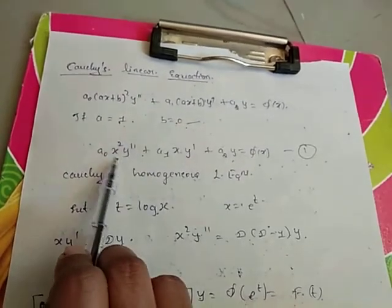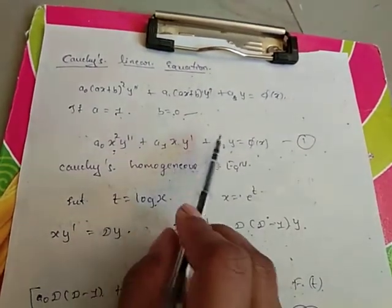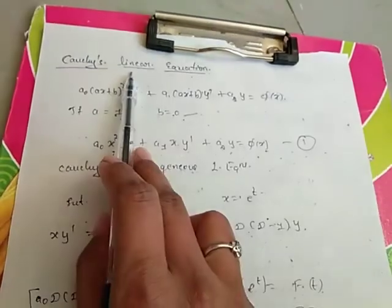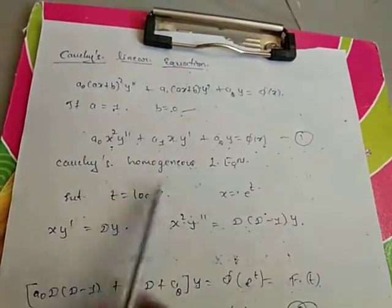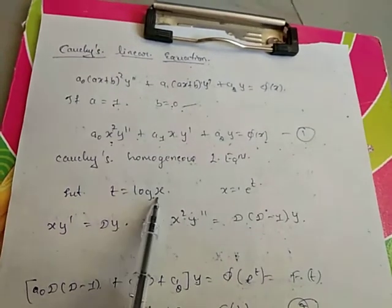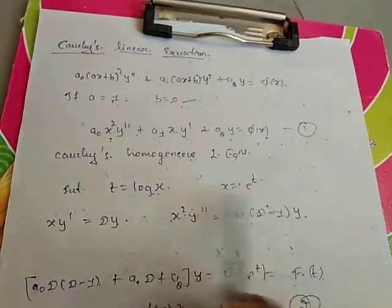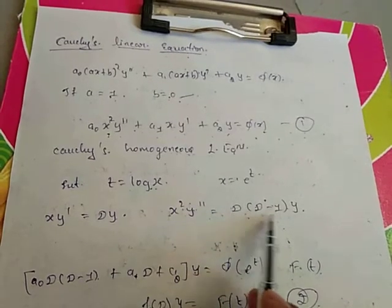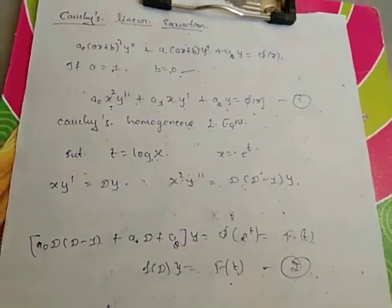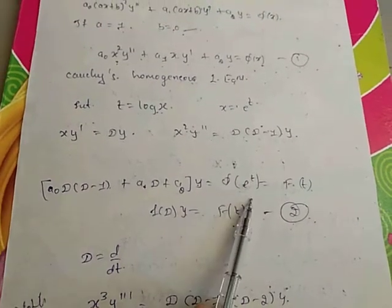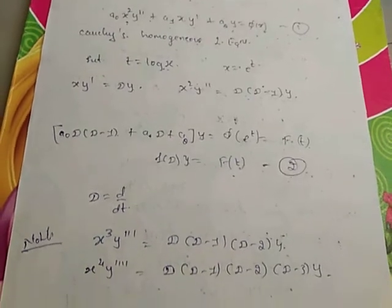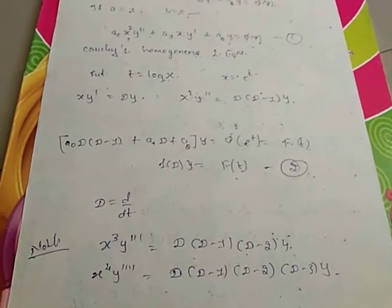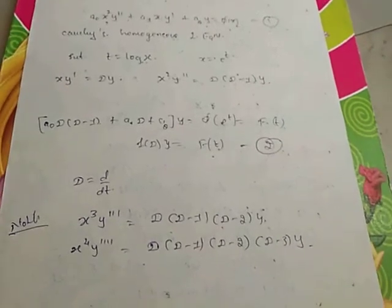Then the Legendre's equation becomes: A₀X²Y'' + A₁XY' + A₂Y = φ(X), which is called Cauchy's linear equation. The substitution for this equation is T = log X, X = e^T, and also X·Y' = DY, X²·Y'' = D(D−1)·Y. Convert the Cauchy's equation into a differential equation with constant coefficients in terms of T, then follow the remaining procedure.